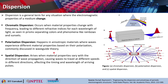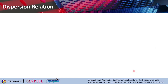Polarization dispersion happens in an anisotropic medium where electromagnetic waves experience different material properties based on the polarization direction. If the refractive index along x and y are different, the two orthogonal polarizations are affected differently. This is commonly discussed in waveguide theory. Spatial dispersion arises when material properties vary with the direction of wave propagation, so waves traveling in different directions have different speeds, affecting the timing and wavelength of arriving pulses.